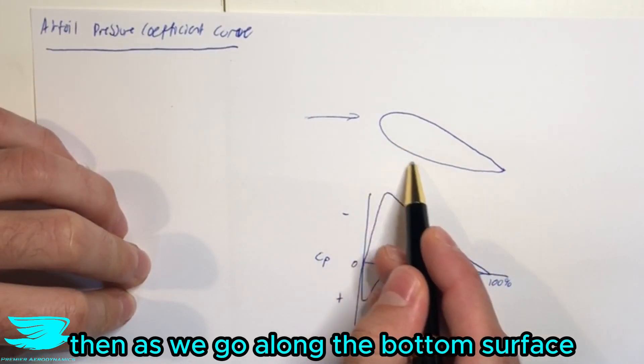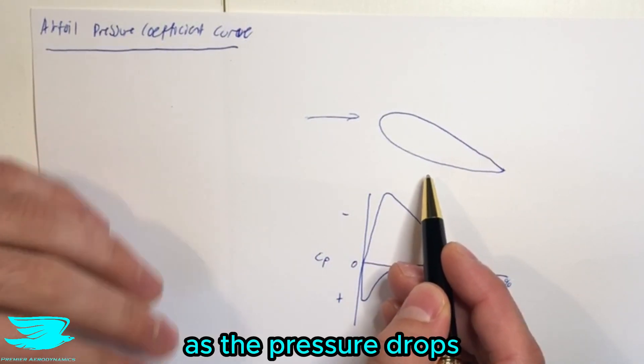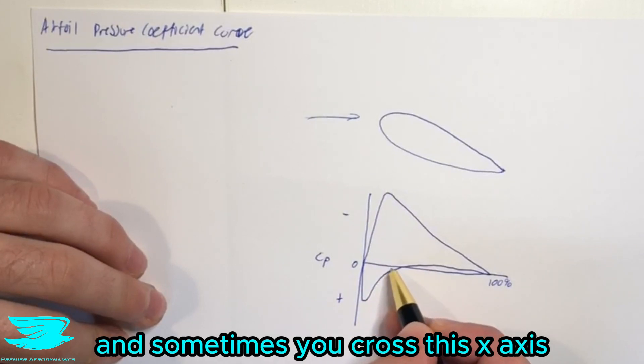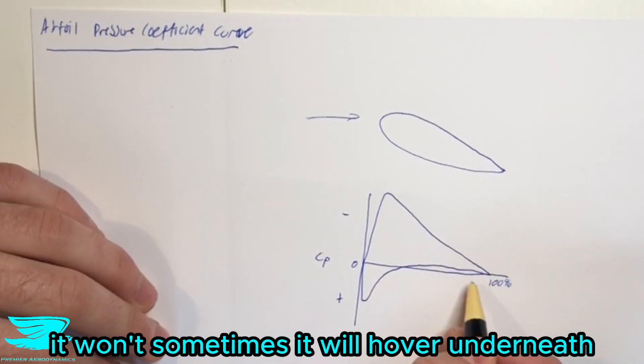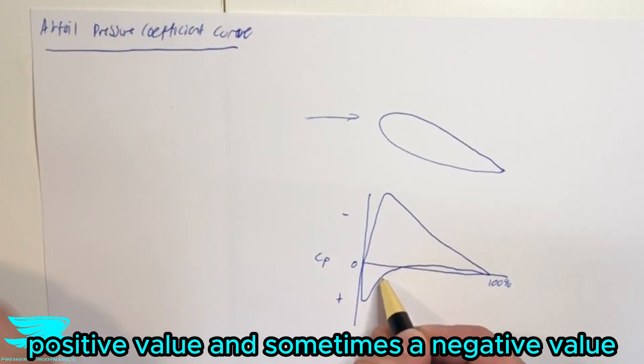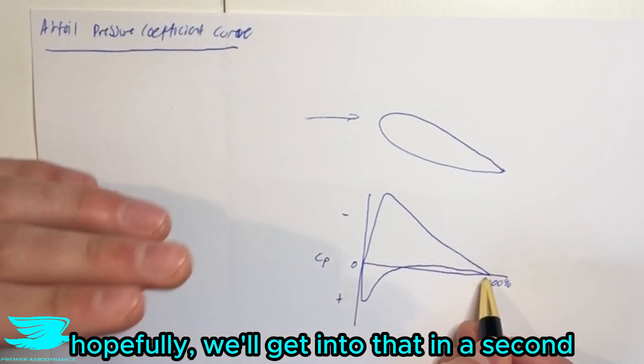Then as we go along the bottom surface, the flow starts to increase in velocity. So the pressure drops. So we get this line starting to increase. And sometimes it will cross this x-axis and go into the negative side. Other times it won't. Sometimes it will hover underneath. But the important point to note is that it goes from this very positive value to a less positive value and sometimes a negative value. And then it trends towards zero. Hopefully. We'll get into that in a second.